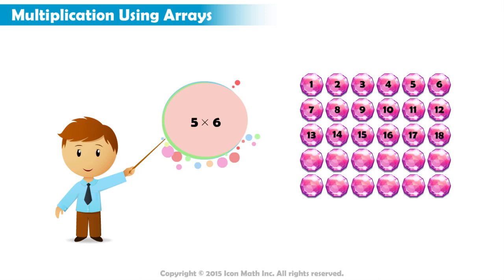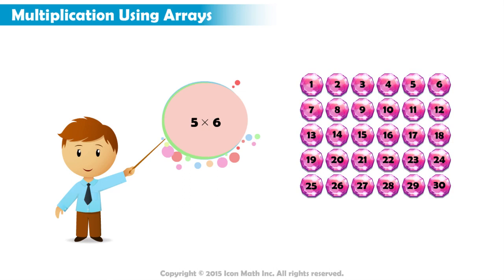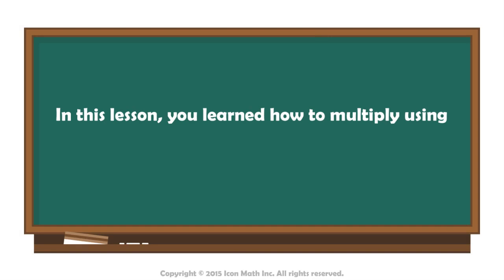Now, we count the total number of objects. There are thirty objects. So, five times six equals thirty. In this lesson, you learned how to multiply using arrays.